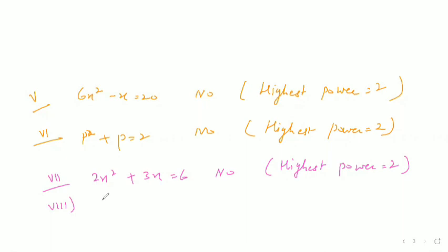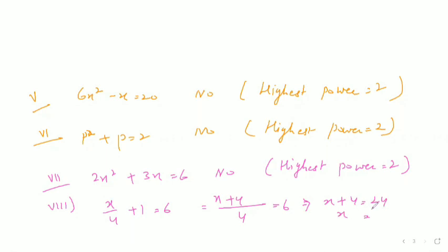Eighth part: x/4 + 1 = 6. Is it a linear equation in one variable? Take the LCM: x + 4 = 24, so x = 20. Yes, it is a linear equation in one variable because it has one variable and its highest power is 1.